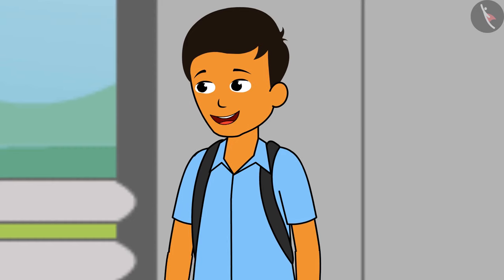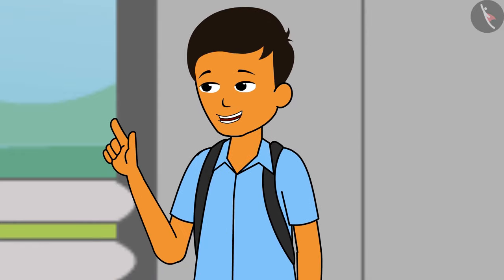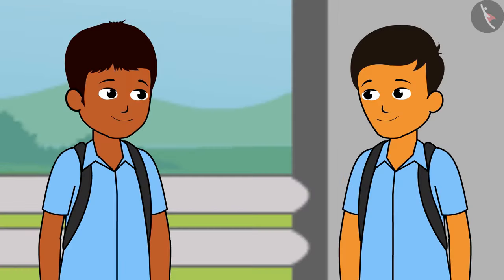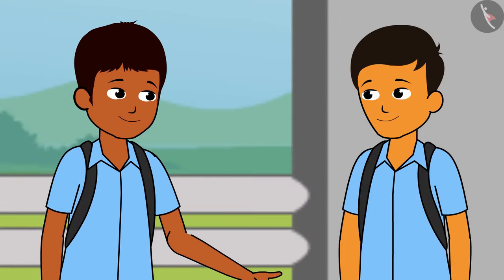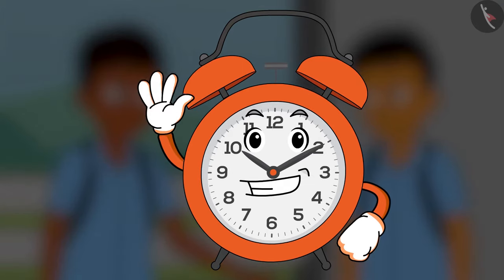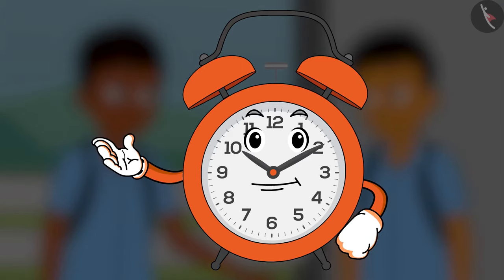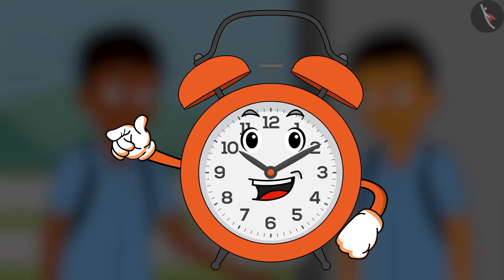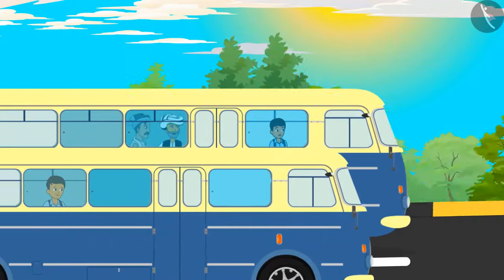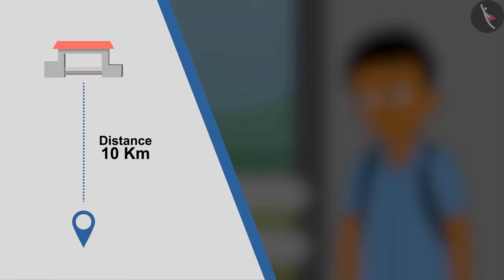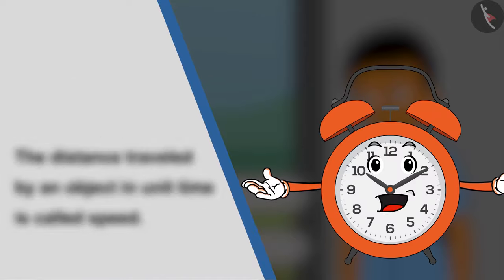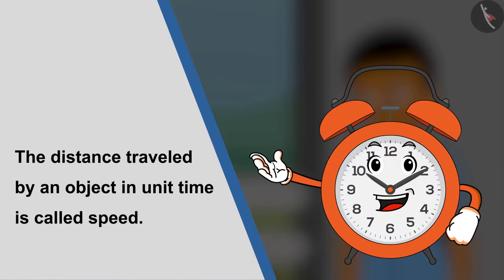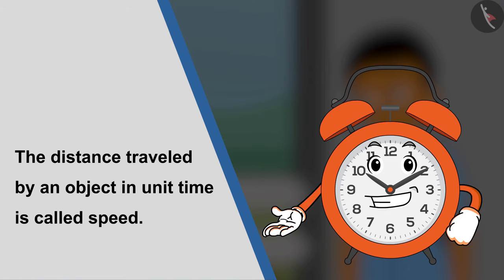Yes, because my bus did not stop anywhere. The speed of vehicles moving fast is more. To find out which vehicle is moving at a faster speed, we will have to know the distance travelled by them in a particular time. The distance travelled by objects in a given time helps us in deciding this.